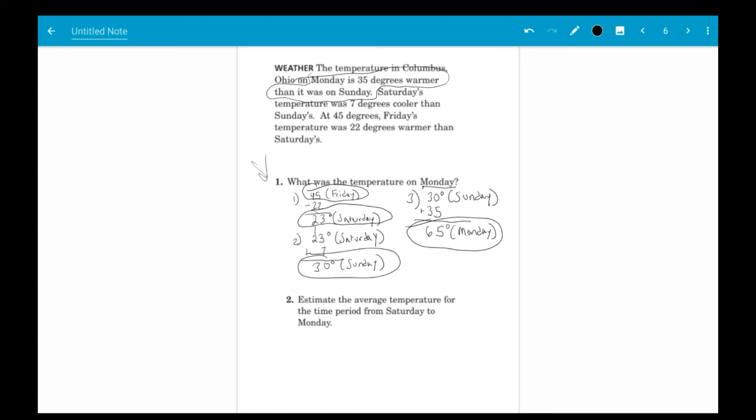So number two just says to estimate the average temperature for the time period from Saturday to Monday. What does average mean? Recall what average means. It's to add up all of the data points. In this case, there's four of them, 45, 23, 30, and 65. And then divide by the number of data points. So we're going to add 45, 23, 30, and 65. We're going to get something. And then you're going to divide by 1, 2, 3, and 4. And that'll give you your average temperature. So I set that up for you. Get started. Do the problem. And it'll be super simple.